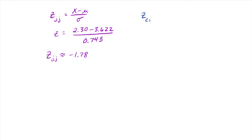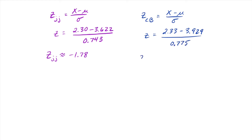We can move over to the z-score for Clay Buchholz. Same formula: x minus mu over sigma. Buchholz had an ERA of 2.33, and we subtract the American League ERA of 3.929, dividing by the standard deviation of the American League, which is 0.775. We end up with a z-score for Buchholz of approximately negative 2.06. So Josh Johnson was negative 1.78 and Buchholz was negative 2.06, which means Clay Buchholz is further below the mean than Josh Johnson.